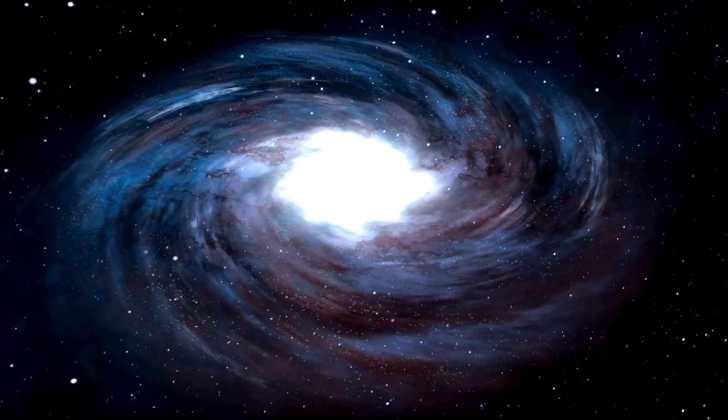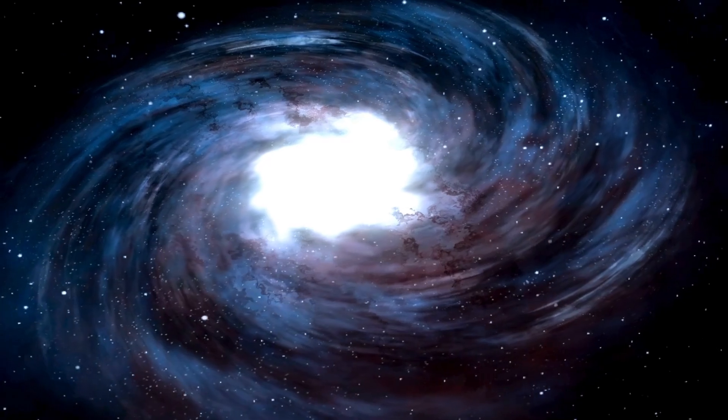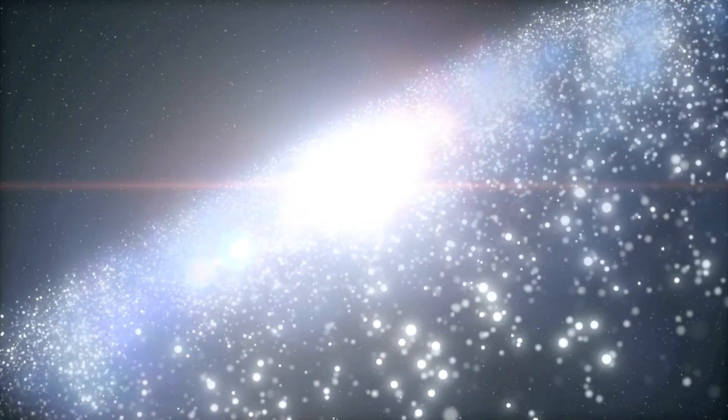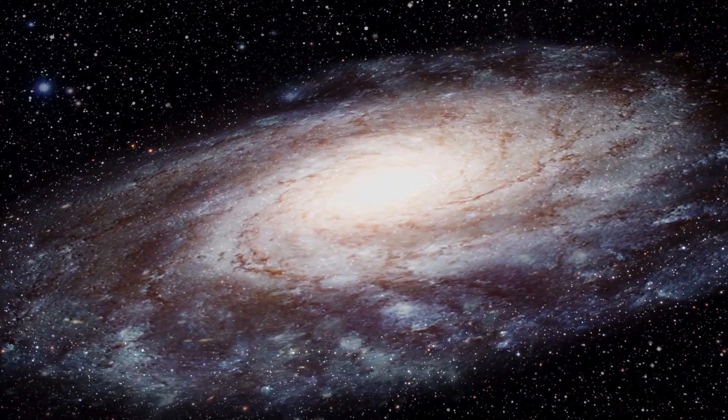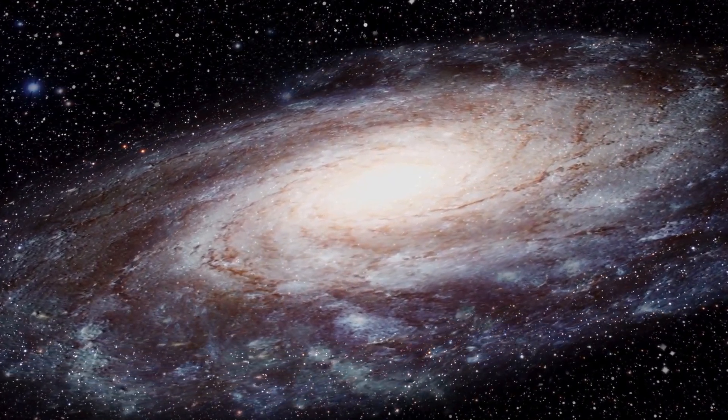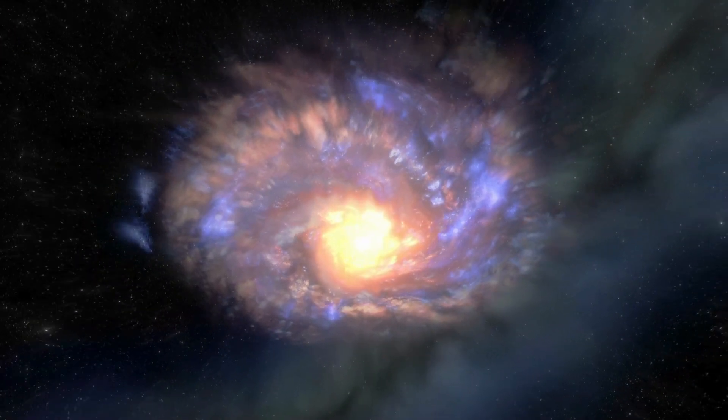Supernovae are cataclysmic events that occur when massive stars reach the end of their life cycles and undergo rapid collapse and explosion. A supernova explosion releases an enormous amount of energy, outshining an entire galaxy for a brief period and producing heavy elements that enrich the interstellar medium. Theoretical models suggest that Betelgeuse, as a red supergiant, could eventually explode in a type 2 supernova, which would be visible from Earth even during daylight hours.